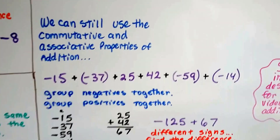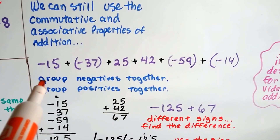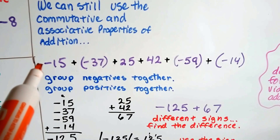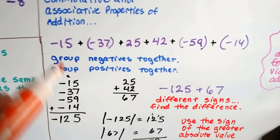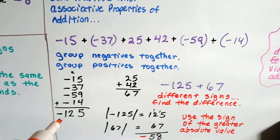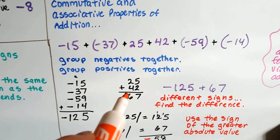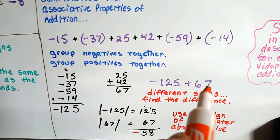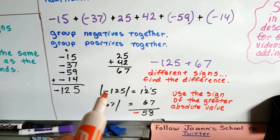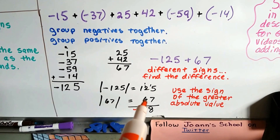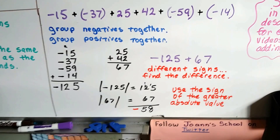Keep in mind, we can still use the commutative and associative properties of addition. When you have a long line of positive and negative numbers, we can group all the negatives together and all the positives together. Add all the negatives — since they all have like signs, the answer is negative — and we get negative 125. Then add the positives together and get 67. Now we have negative 125 plus positive 67, with different signs. The absolute value of negative 125 is 125, and of positive 67 is 67. We subtract to find the difference: 58. We take the sign of the greater absolute value — negative 125 — so the answer is negative 58.